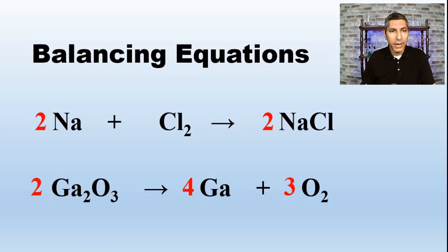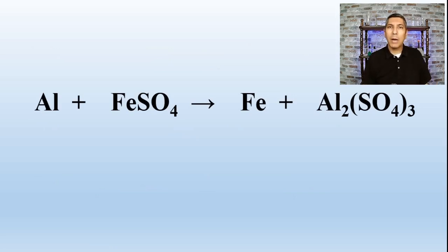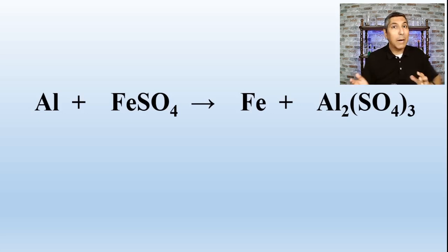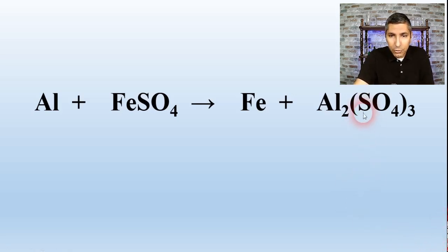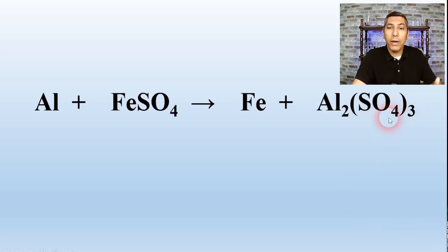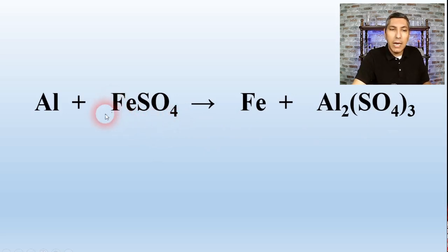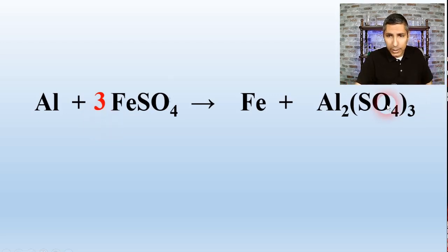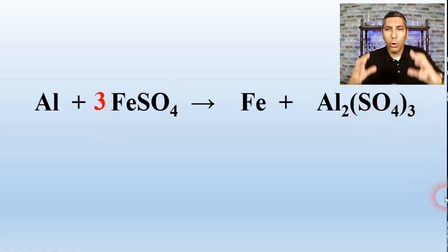Now let's look at a single replacement reaction. Sometimes students get concerned when they see parentheses and polyatomic ions. In a single or double replacement reaction, I strongly recommend that you treat a polyatomic ion like its own little unit. For example, on the right side, treat SO4 like its own entity. The subscript 3 tells me we have three sulfate ions. On the left side I only have one sulfate ion, so if I multiply FeSO4 by 3, the SO4 ions are balanced — you don't need to worry about multiplying the 4 or the S separately. Treating SO4 as its own entity is a great method to simplify things.